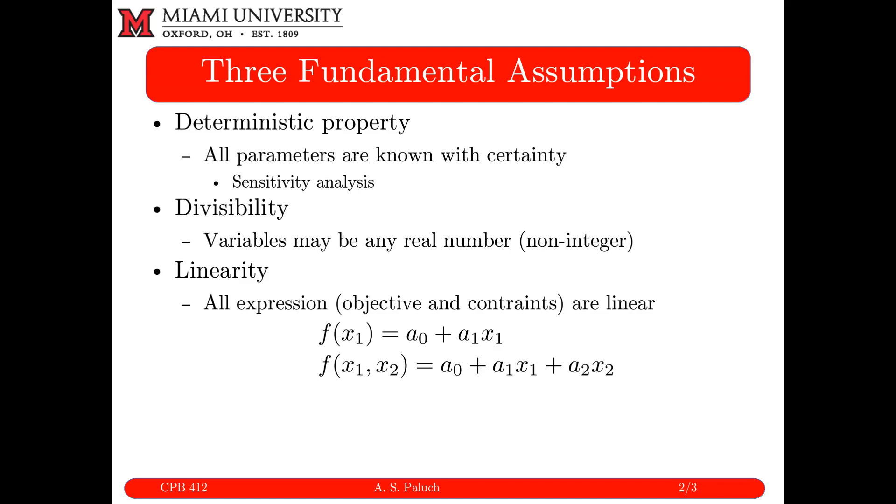And then finally, linearity. So all of our expressions, both objective and constraints, need to be linear. And so what does that mean? So if f was some function of x1, then it would take the form of a naught plus a1 times x1, where a naught and a1 are just constants. Or if I had some function f, which is a function of some variables x1 and x2, then that would be expressed as a naught plus a1 x1 plus a2 x2, where a naught, a1 and a2 are all constants. Linearity.